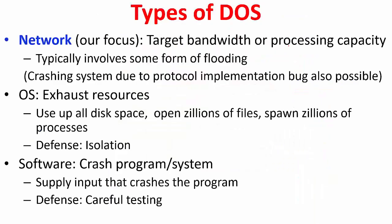Now let's get into the detail. There are many types of DOS attacks, but we will focus on network-based DOS attacks. With network-based DOS attacks, you essentially target the bandwidth or the processing capacity of the machine connected to the internet, and this typically involves some form of flooding. Crashing a system due to protocol implementation bugs is also possible, where you use a network protocol vulnerability to crash a particular service. You can also launch attacks based on the operating system where you exhaust resources — for example, using up all disk space, opening zillions of files, or spawning zillions of processes so that machine is no more of use.